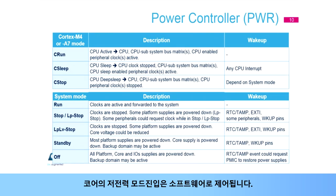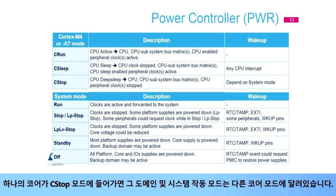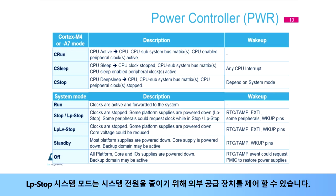The core entering low-power mode is controlled by software. When one core enters C-stop mode, the domain and system operating mode depend on the other core's mode. LP-stop system mode can be used to control external supplies to reduce system power.